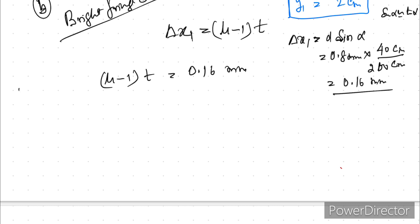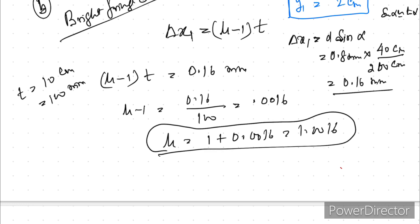Here what is t? t is nothing but 10 cm or 100 mm. Correct? So mu minus 1 will be nothing but 0.16 upon 100, or we can write it as 0.0016 or mu will be nothing but 1 plus 0.0016.